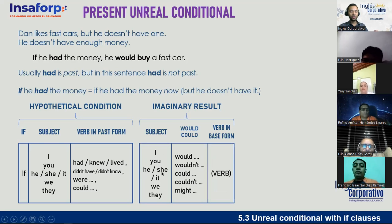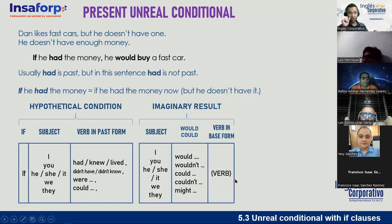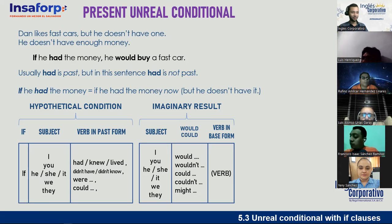The imaginary result: 'I/you/he/she/it/we/they would' + verb in base form. Negative: 'wouldn't' + verb in base form. You can also use 'could' or 'couldn't' + verb in base form, and 'might' is also possible. The reason we use a verb in base form is because these are modal auxiliaries, and as we saw last week, after a modal you always use a verb in base form.